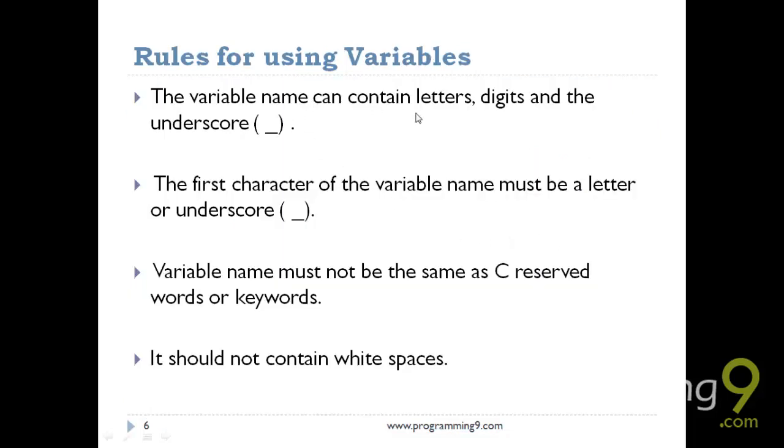There are some rules for using variables. The variable name can contain letters, digits, and the underscore. The first character of the variable must be a letter or underscore - it is highly not recommended to use the underscore, it's better to use the alphabet. Variable name must not be the same as the reserved words or keywords. We will discuss about the keywords later, but there are some predefined keywords - generally those are 32 keywords. You should not use those keywords as the variable names. It should not contain any white spaces.